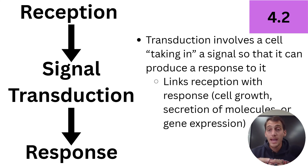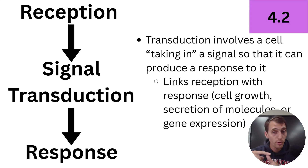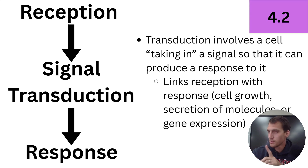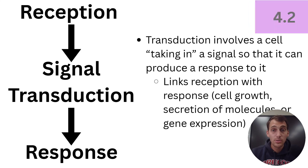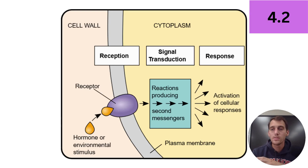Those responses could be anything from: cell, you should continue to grow; cell, you should divide; cell, secrete this molecule; cell, create this protein; or in some circumstances, cell, self-destruct. That happens sometimes — we'll talk about that more later in this unit. Signal transduction is taking in the reception of that signal and then causing something to happen.